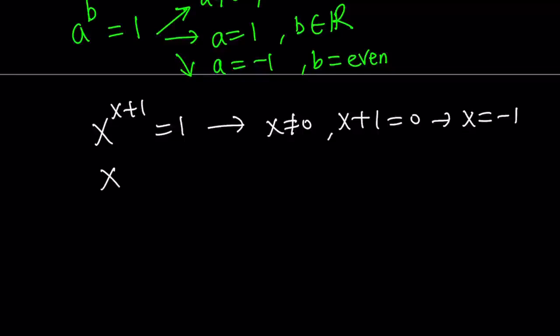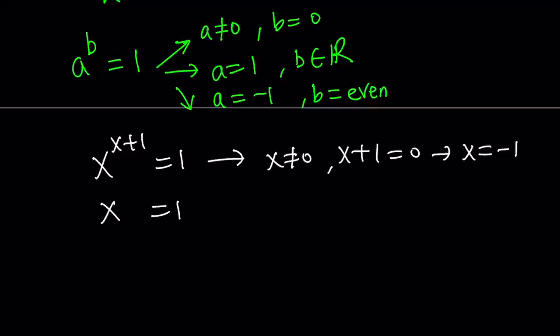The second scenario is x equals 1 because that's the base. Remember that, right? And in this case, we don't really care about x plus 1, but we just want it to be a real number. And it is going to be a real number, so don't worry about it. So x equals 1 is going to be the other solution.